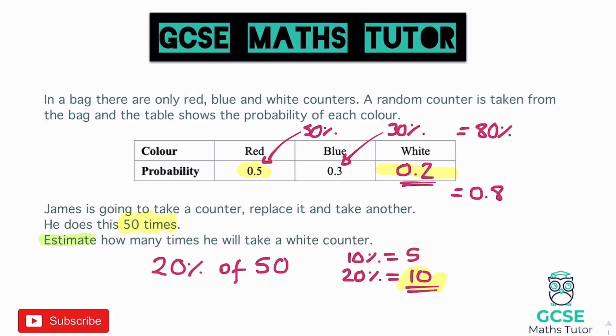If you have a calculator, there's a quick way: just do 50 multiplied by 0.2. That's the calculator way of saying 'work out 20%', and you'll get the same answer of 10. It's a nice shortcut but the percentage method helps with understanding the topic.